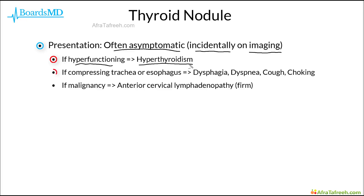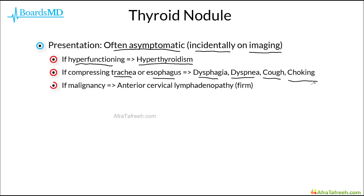Additionally, if the nodule compresses local structures such as the trachea or the esophagus, this can lead to several distinct symptoms, including dysphagia, dyspnea, cough, or a sensation of choking. And in the case of thyroid nodules which represent a malignancy, this can ultimately go on to cause anterior cervical lymphadenopathy.